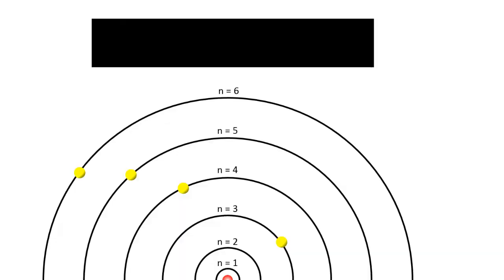Let's examine the emission lines of the hydrogen spectrum. A transition from the third orbit to the second orbit emits red light at a wavelength of 656 nanometers.